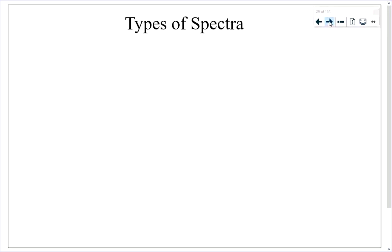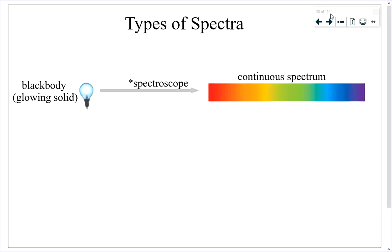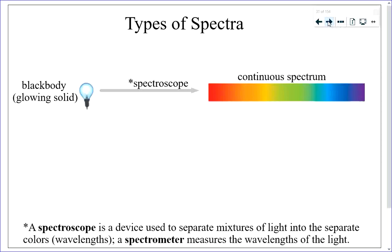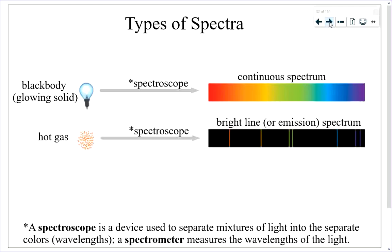We need to review types of spectra. A continuous spectrum is produced by light emitted from a glowing solid called a black body. To see all the colors we pass that light through a spectroscope, which separates the different colors into wavelengths. A spectrometer differs from a spectroscope in that a spectrometer allows us to actually measure the wavelengths of the light. If you look at light emitted from a hot gas and pass it through a spectroscope, you get what's called a bright line or emission spectrum.